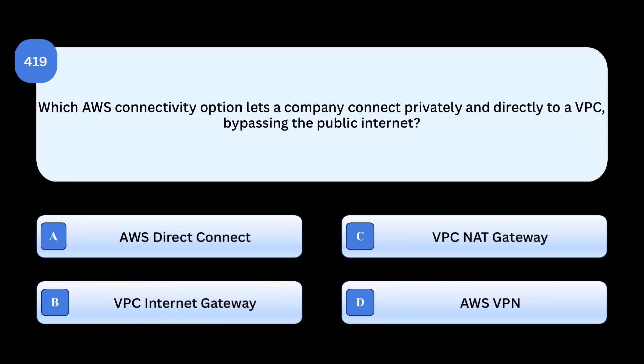Which AWS connectivity option lets a company connect privately and directly to a VPC, bypassing the public internet?